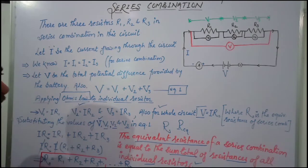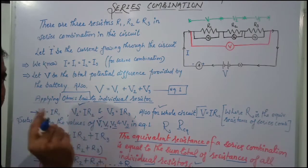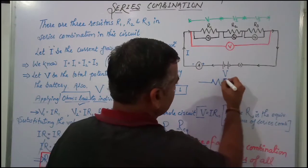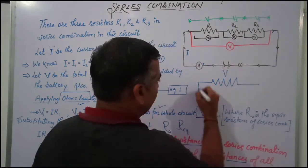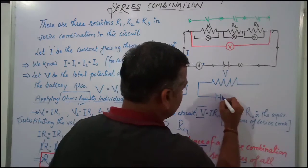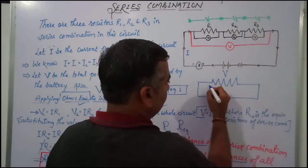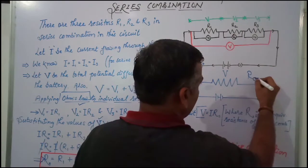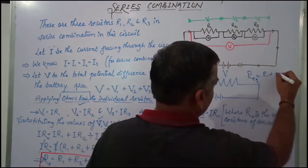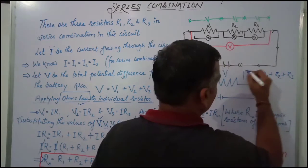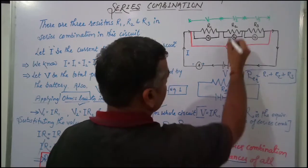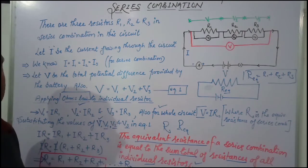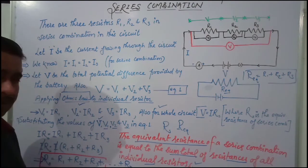So if we want to find the resistance of a single resistor which can replace all three resistors, this single resistor would have a resistance equal to R1 plus R2 plus R3. This is the equivalent resistor of the series combination. This is how we derive the expression for calculating the equivalent resistance of a series combination. Thank you.